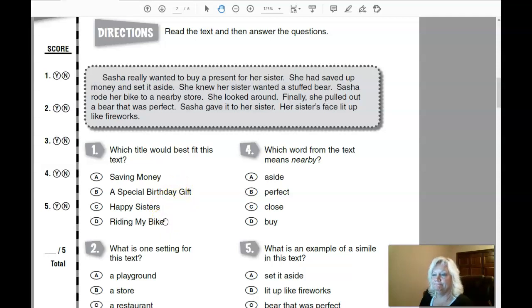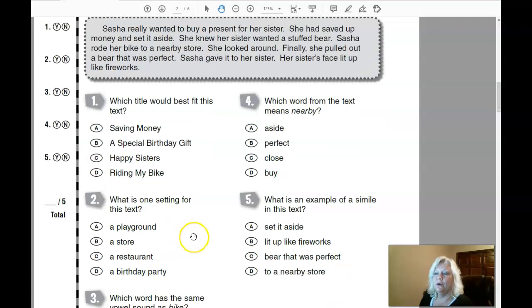Number two: What is one setting for this text? Setting meaning where did it happen. A playground, a store, a restaurant, or a birthday party. This one's a little bit tricky because you're thinking of a store and a birthday party.